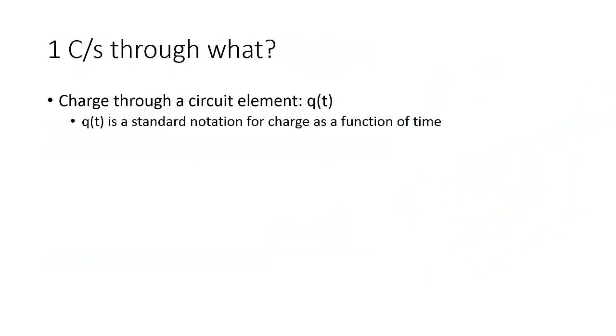Now a reasonable question is, well through what? What is it flowing through? And this answer is a little bit abstract. So we're going to talk about circuit elements. And we're going to start asking ourselves, well what does that mean? So when electricity flows through a circuit, what's really going on there?